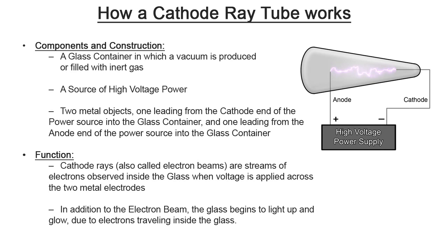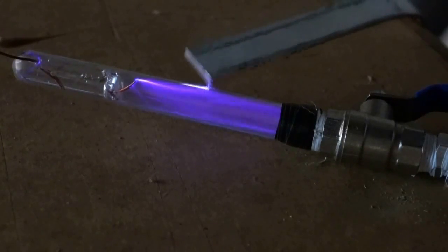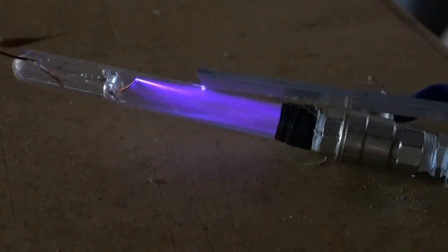Since the cathode ray tube was the technology based on the philosophy of the atom, we want to discuss its components. The cathode ray tube consists of a glass container in which a vacuum is produced or that container is filled with inert gas. You need a high voltage power source and two metal electrodes — one from the cathode end into the glass container and another from the anode end. When voltage is applied, a stream of electrons travels from cathode to anode, creating a cathode ray, and the glass begins to light up and glow.